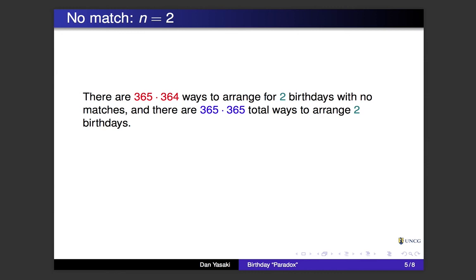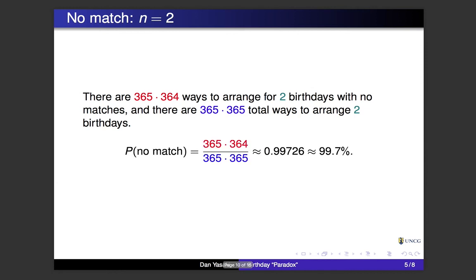Now let's compute the probability of no match with two people. There are 365 ways to arrange the first birthday with no matches, and for the second person there are only 364 remaining choices, giving 365 times 364 ways with no matches. The total ways to arrange two birthdays is 365 times 365. So the probability of no match with n=2 is 365×364 divided by 365×365, which gives about 99.7%. Not surprising — with only two people, a match is highly unlikely.